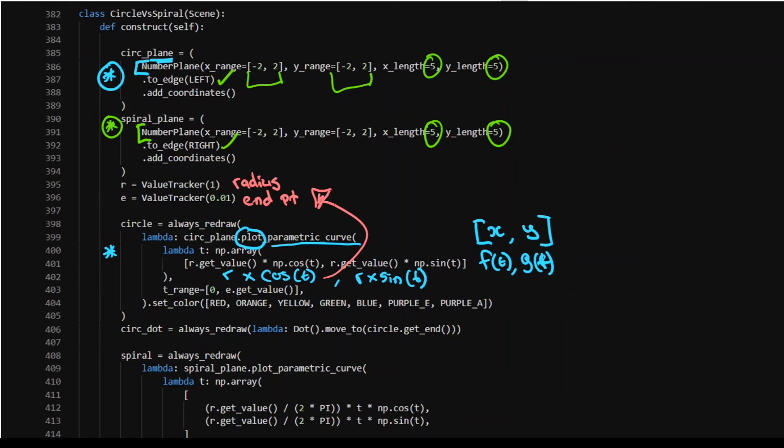That's why I've got this always redraw statement there. And then the range that we are considering goes from zero through to the end value of the function, which is as time moves on. That guy there. Very cool.